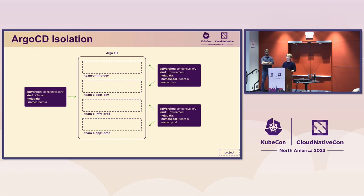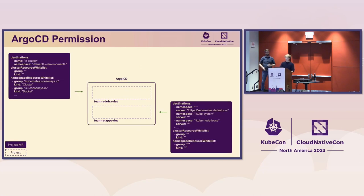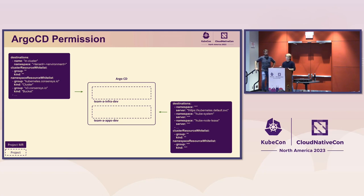Now let's talk about our ArgoCD isolation. The tenant creates an ArgoCD instance, and the environment creates projects — projects are the isolation mechanism within Argo. We create two different kinds of projects: one for infrastructure resources and one for workloads. For the infra project, the destination is in-cluster because it contacts the control plane, we patch the namespace with the corresponding tenant and environment. We don't allow cluster-scope resources, but we do allow namespace resources — that's the catalog we offer as our infrastructure API, such as Kubernetes clusters and S3 buckets.